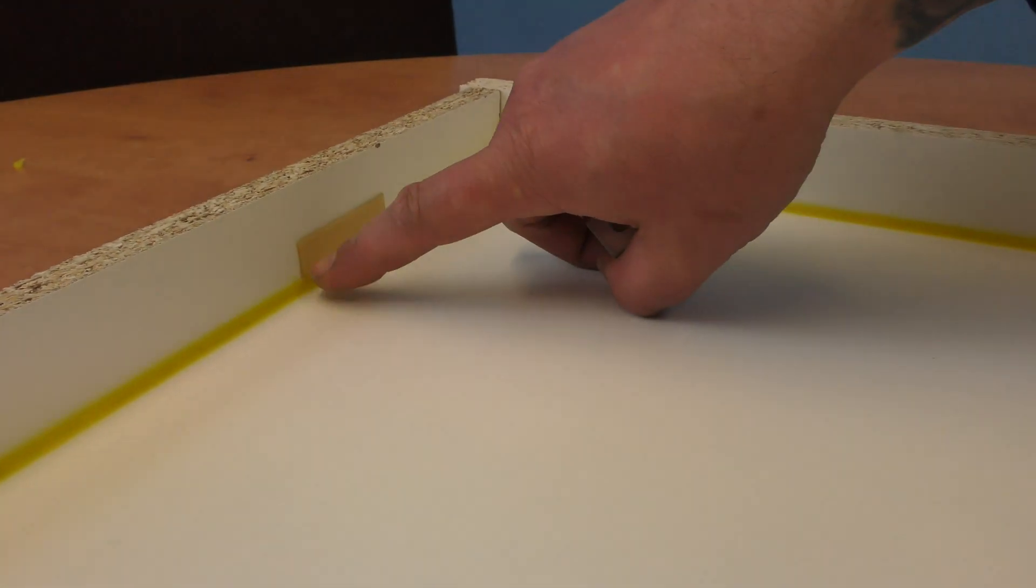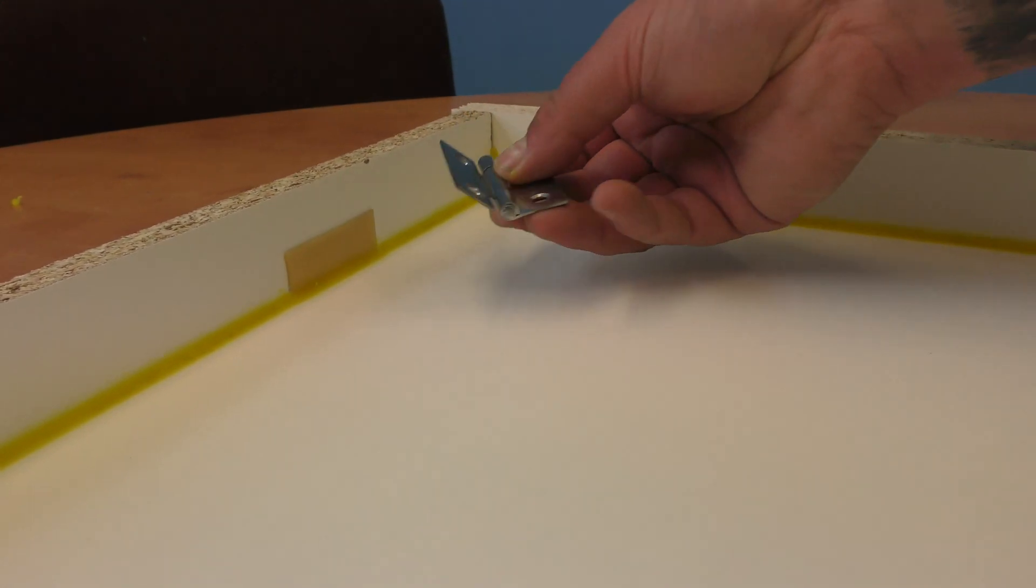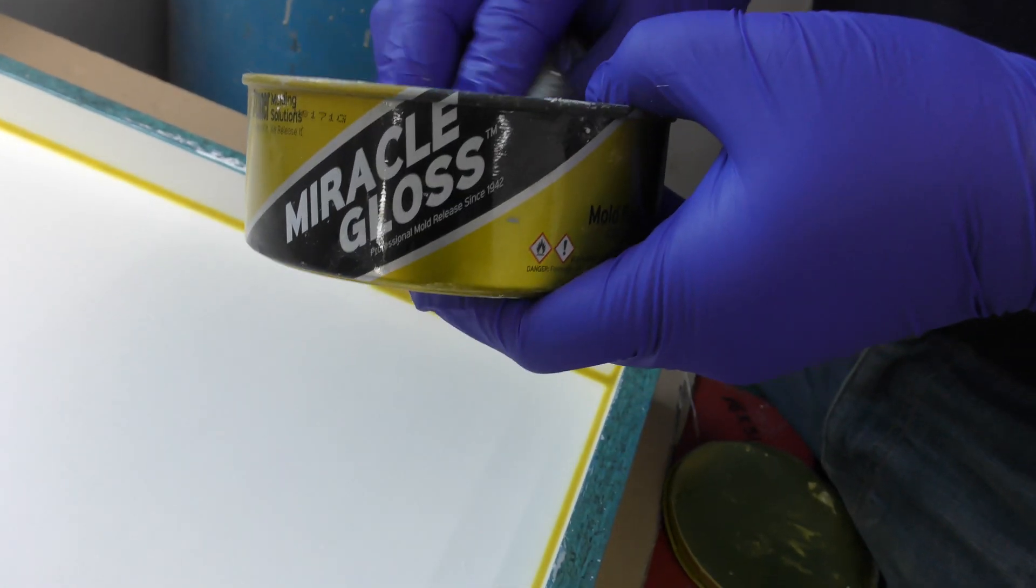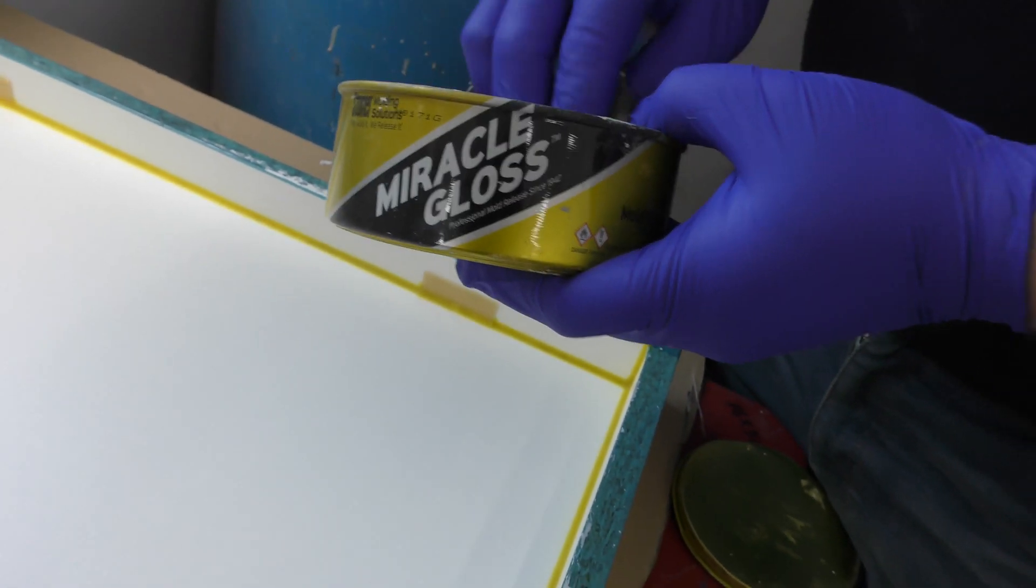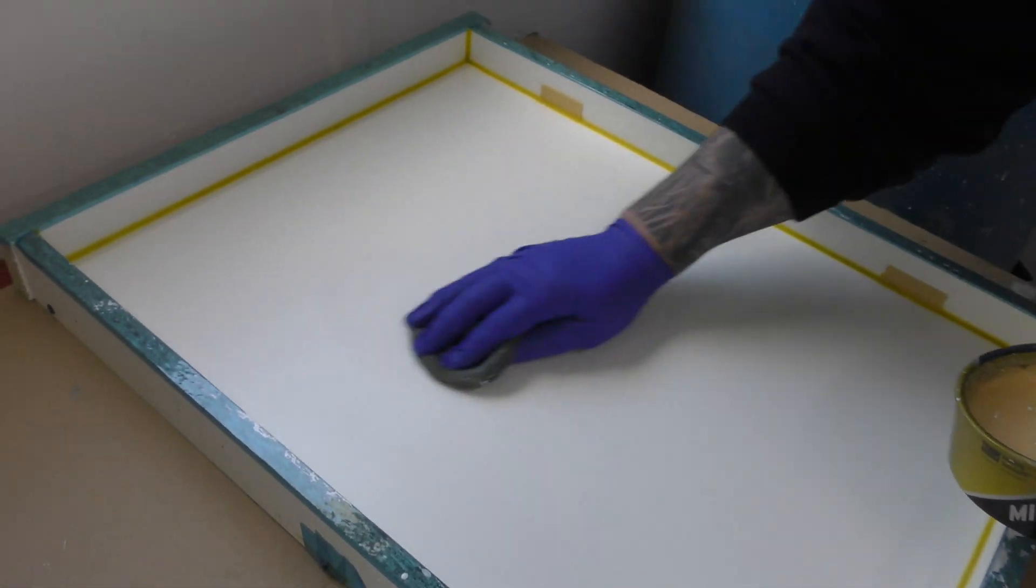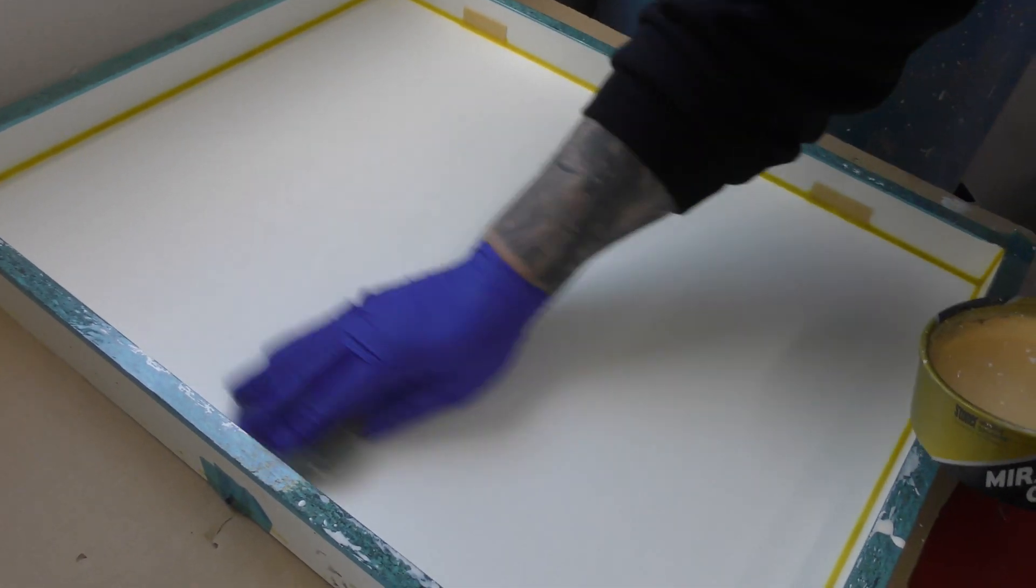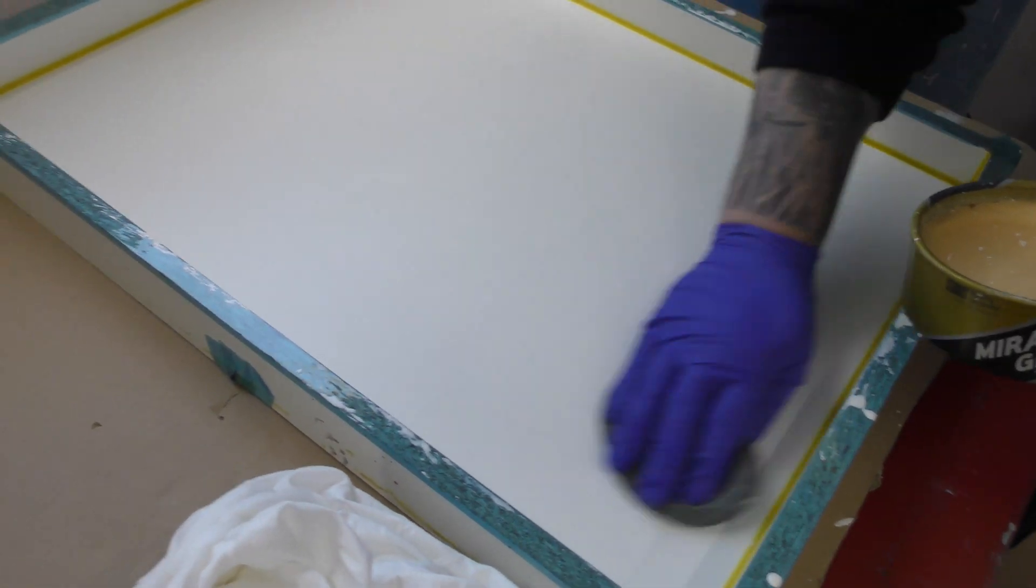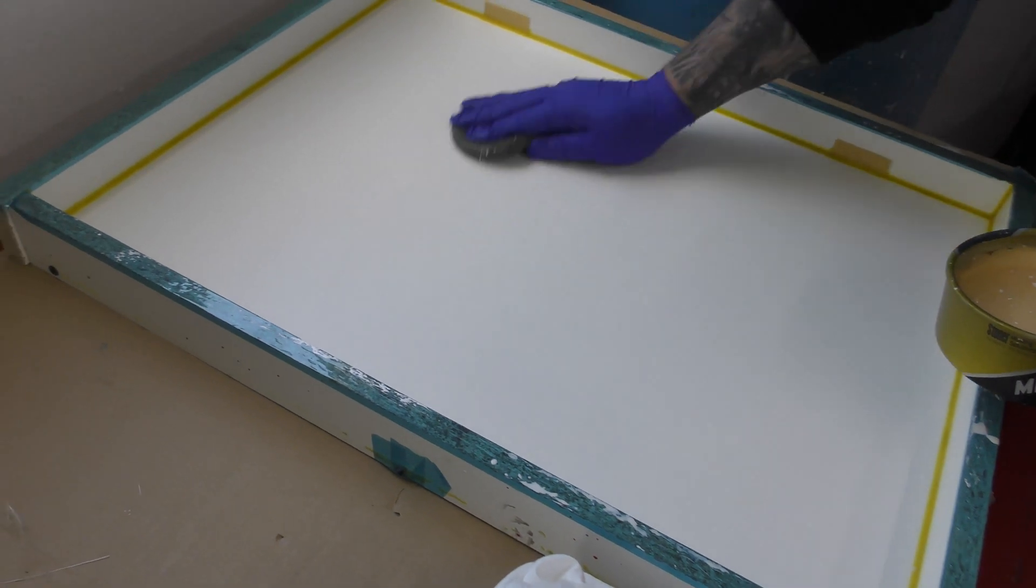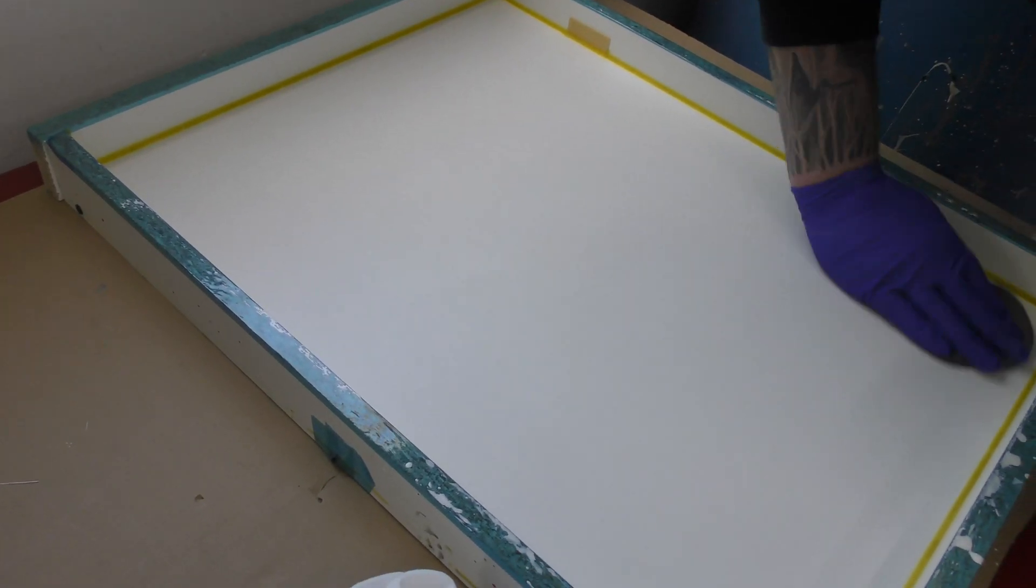Next we apply a light coat of mold release wax. We're using the Miracle Wax here, but you can use any wax from our Meguiar's or TR range. As you can see, we just lightly apply this with a sponge applicator and then we're going to buff that off with a cotton cloth.